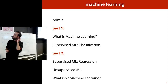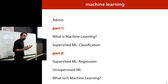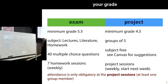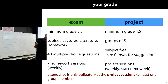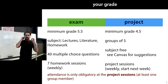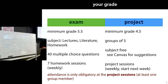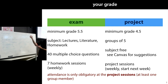With a little luck that should set you up well for the next seven or eight weeks. Let's start with the basics: your grade is made up of two parts, a project and an exam, each weighing 50%. To pass you need a 5.5 on average, your exam grade needs to be 5.5, and your project grade needs to be at least 4.5. The exam covers lectures, literature, and everything in the homework. Homework sessions are weekly, starting this week.